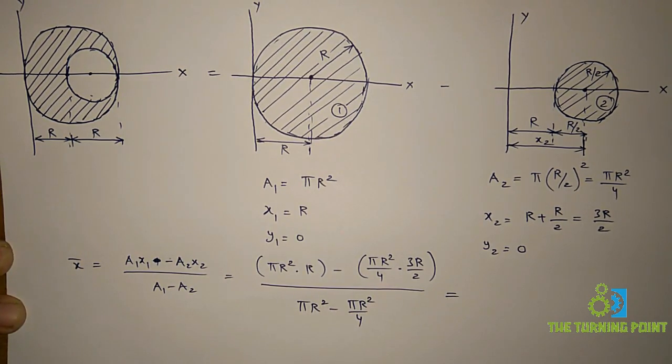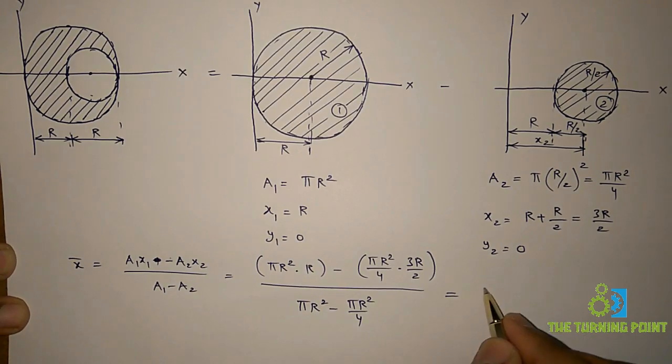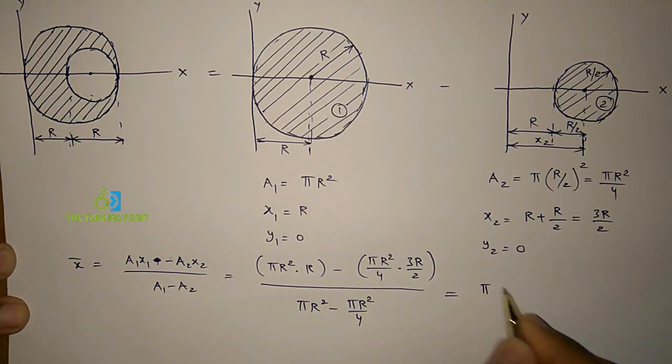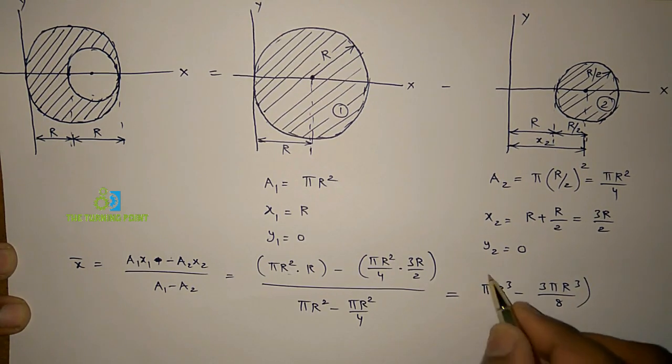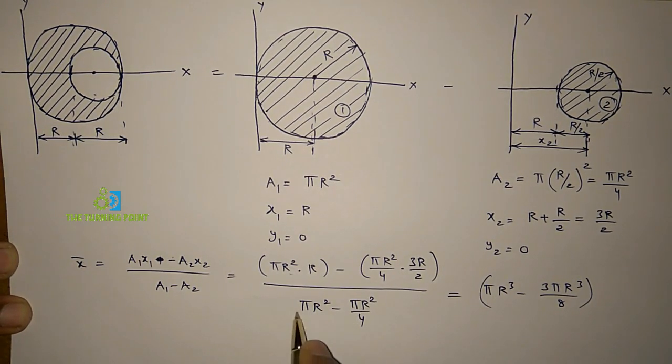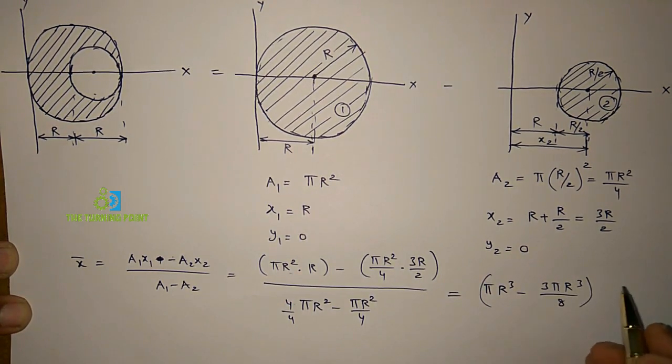So which is equal to pi r cube minus this is pi r cube, this is 3 pi r cube divided by 8. So this one, multiply the numerator and denominator with 4, so 4 by 4. So then 4 minus 3, 4 minus 1 that is 3, 3 pi r square divided by 4.